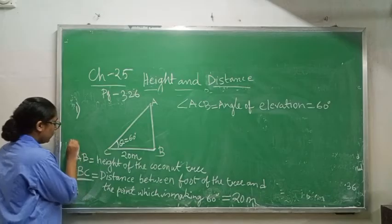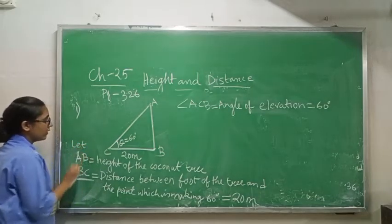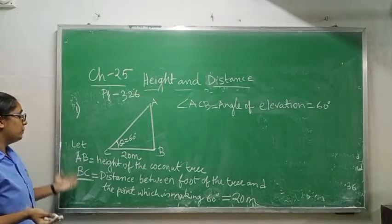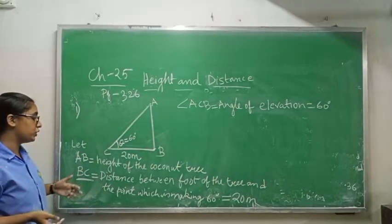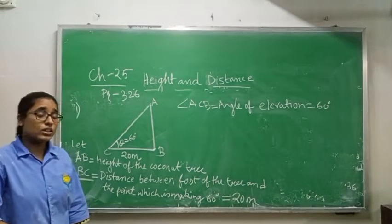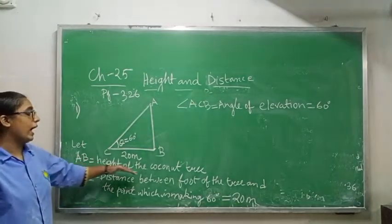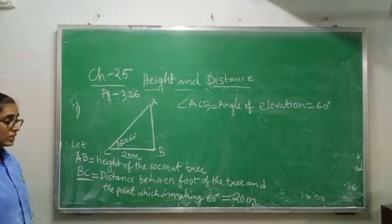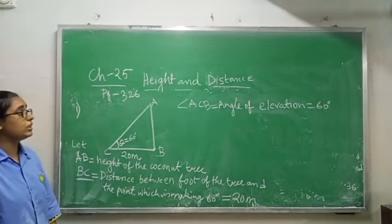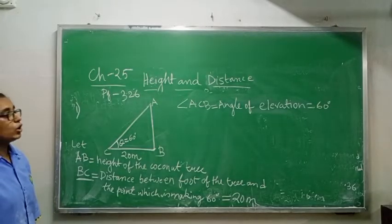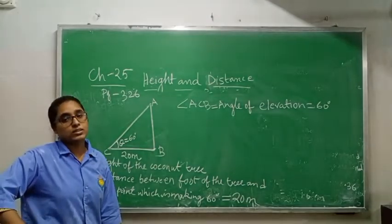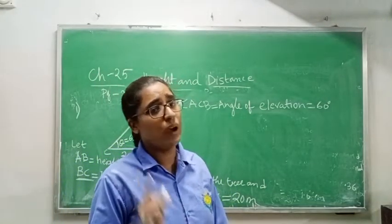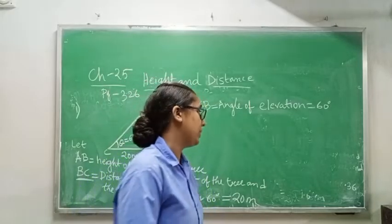Now you have to find — please read the question — 'find the height of the tree.' The height of the tree is AB. BC you know, and the angle you know. So in triangle ABC, we will use tan theta equals P by B, because AB is perpendicular and BC is base. Base value is known (20 meters), and we have to find the perpendicular. That is why we use tan theta.